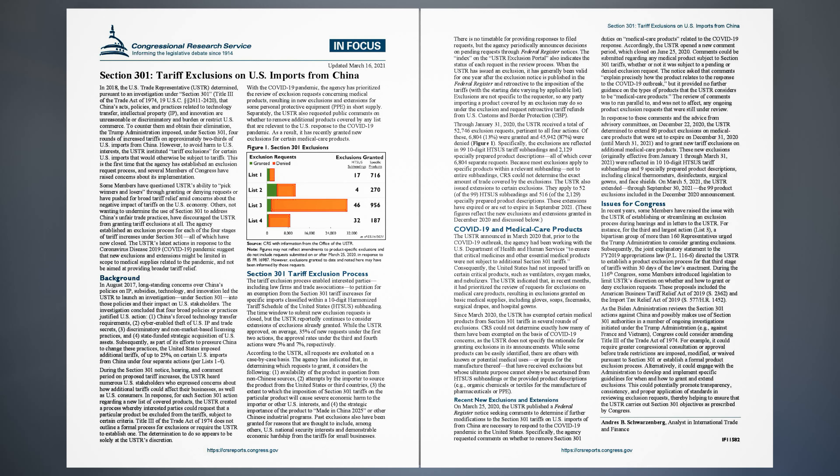In response to these comments and the advice from advisory committees, on December 22, 2020, the USTR determined to extend 80 product exclusions on medical care products that were set to expire on December 31, 2020, until March 31, 2021, and to grant new tariff exclusions on additional medical care products. These new exclusions, originally effective from January 1 through March 31, 2021, were reflected in 10 10-digit HTSUS tariff subheadings and nine specially prepared product descriptions, including clinical thermometers, disinfectants, surgical gowns, and face shields. On March 5, 2021, the USTR extended, through September 30, 2021, the 99 product exclusions included in the December 2020 announcement.